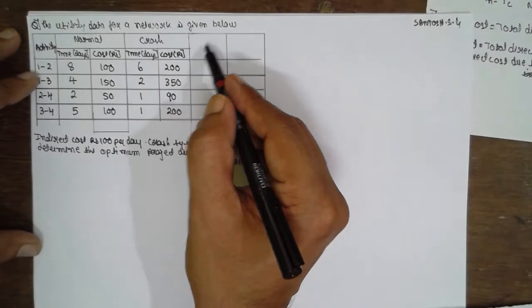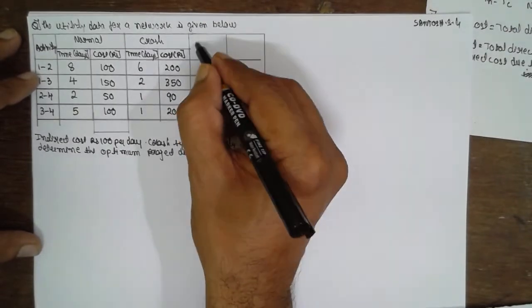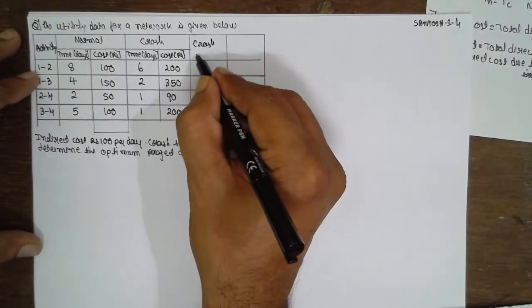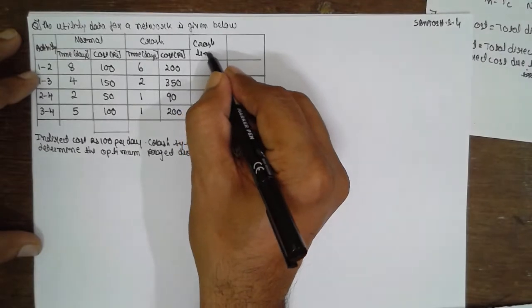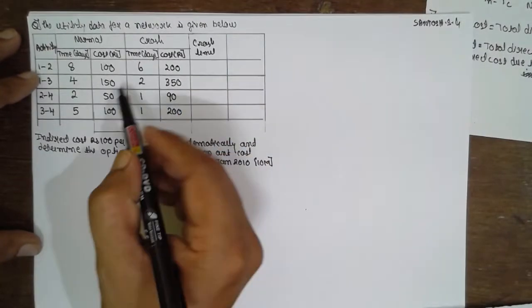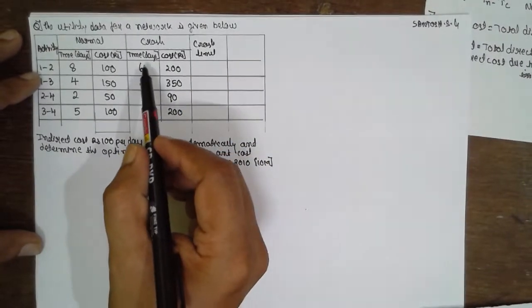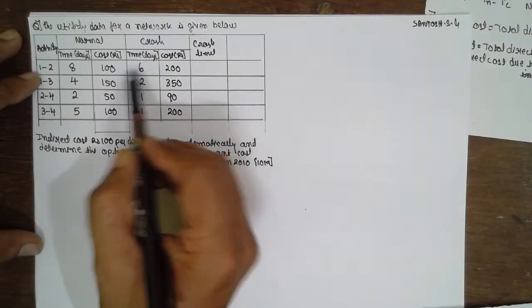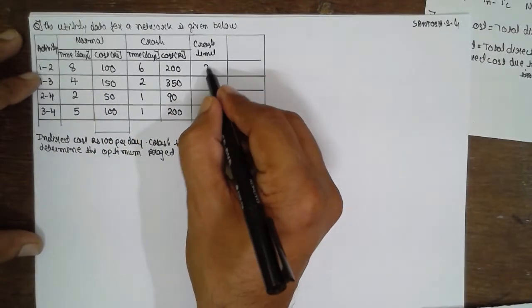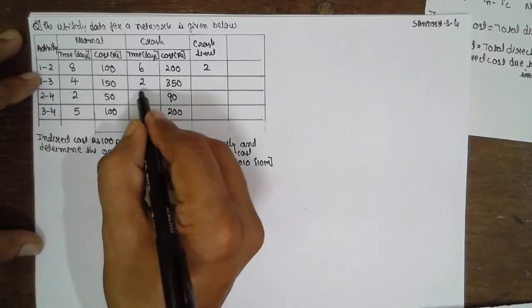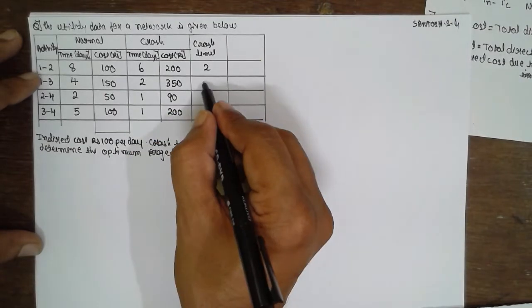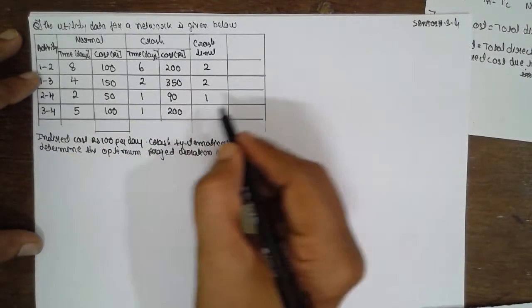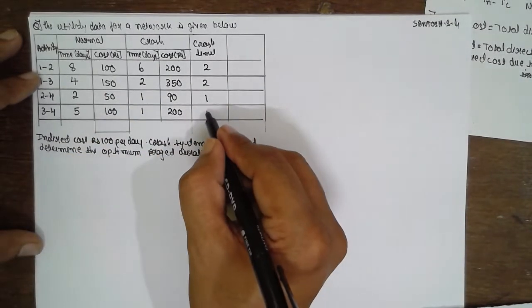Now we are going to find out the crush limit. The crush limit is nothing but the difference between normal time and the crash time. 8 minus 6 is 2, 4 minus 2 is 2, 2 minus 1 is 1, 5 minus 1 is 4.